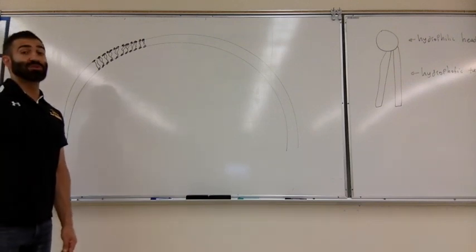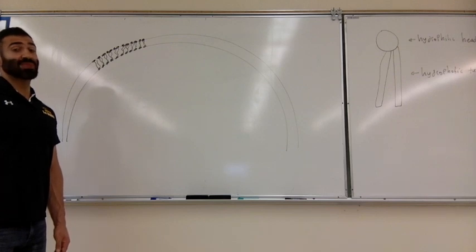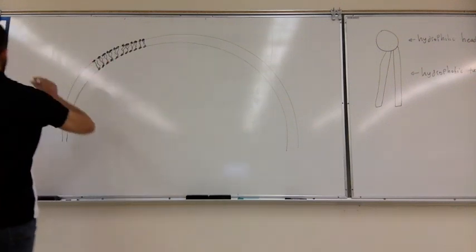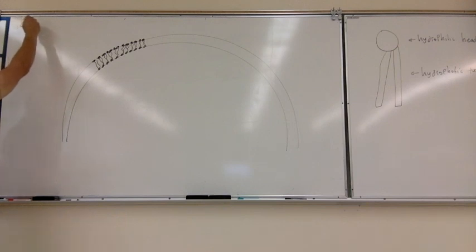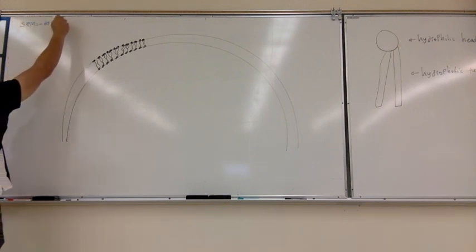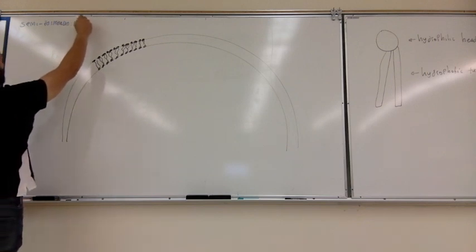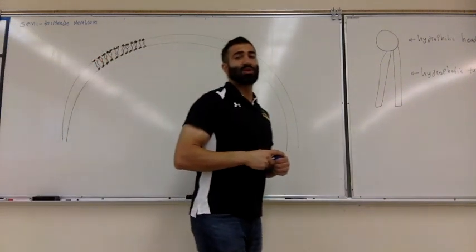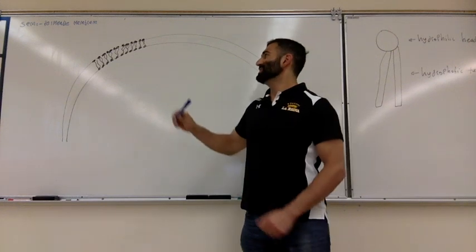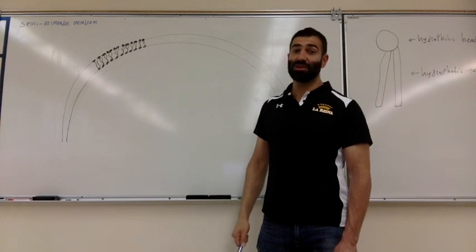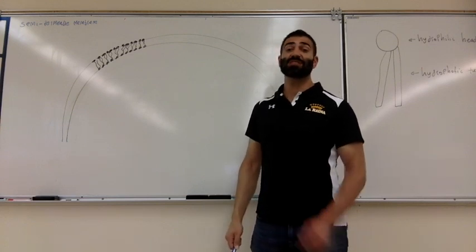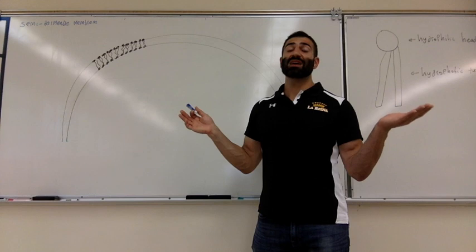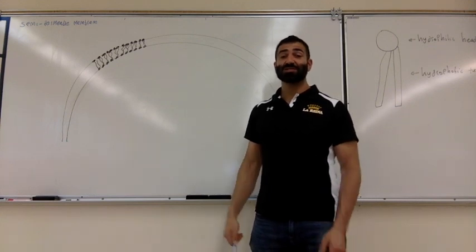Animal cells, at least, are made up of something called a phospholipid bilayer. If you remember from your introductory biology class, it's called a semipermeable membrane. Semi means 'kind of' and permeable means 'pass through,' so this means things can kind of pass through this membrane. There are certain things that can go in and out of the cell without any impediments, and then there are things that cannot freely move through, so they need some help.